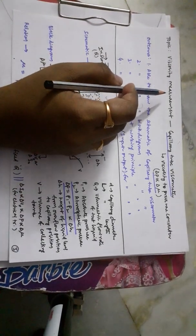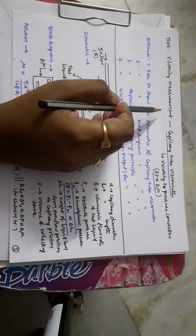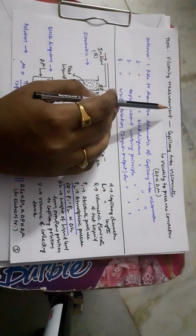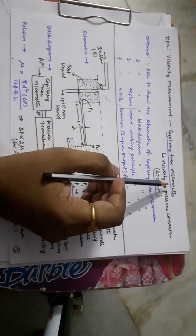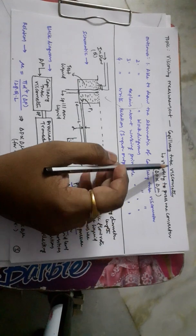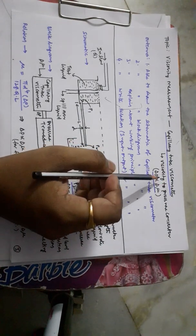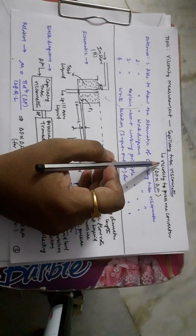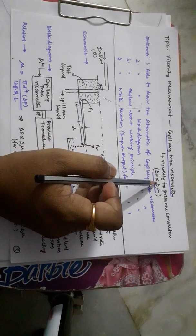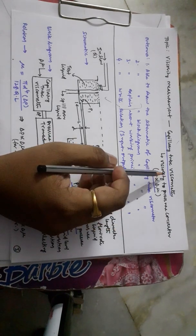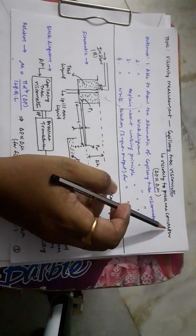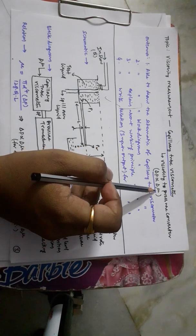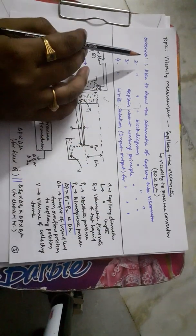In this video we will see how to measure viscosity using a capillary tube viscometer. The topic is viscosity measurement and the subtopic is capillary tube viscometer. The capillary tube viscometer is referred to as a viscosity-to-pressure converter, meaning the input measurable quantity — viscosity — is converted to pressure as part of the measurement. The output delta P is proportional to the input delta mu.